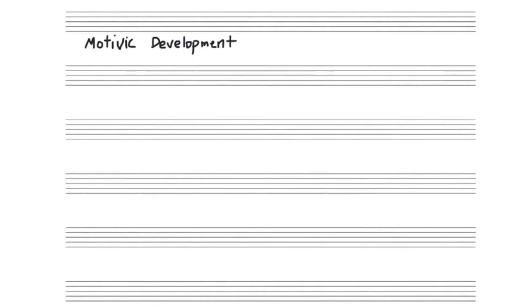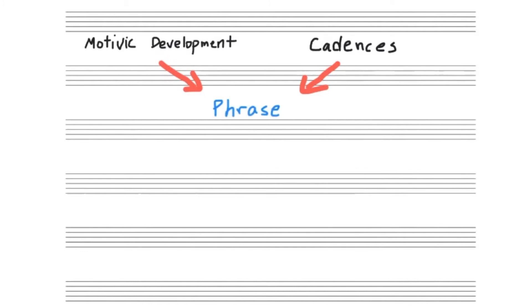In the previous video, we learned about motivic development and cadences, and this led to the composition of a musical phrase. In this lesson, we will take the musical phrase and expand that out into three different types of small form.